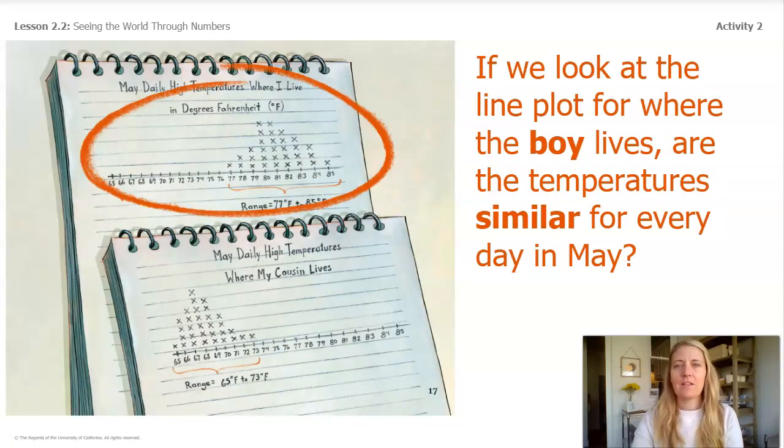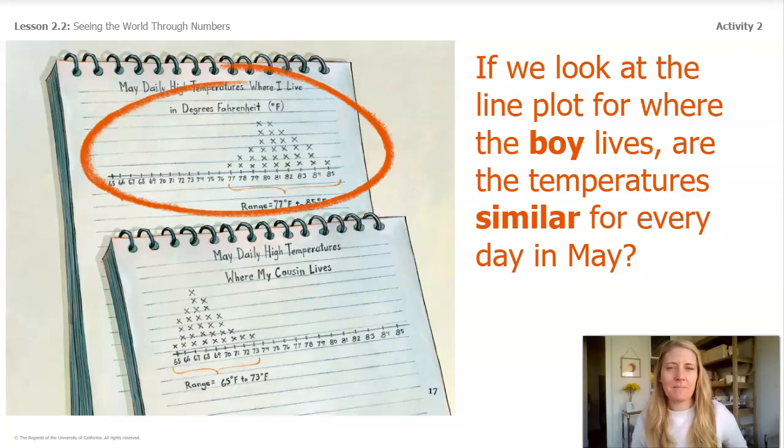If we look at the line plot for where the boy lives, are the temperatures similar for every day in May? Hopefully you said yes, because a pattern is something you observe to be similar over and over again.